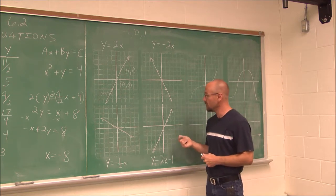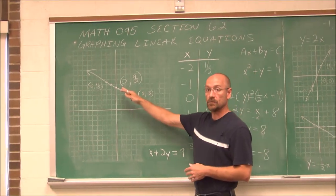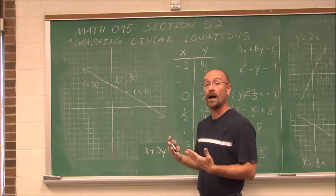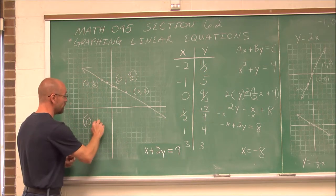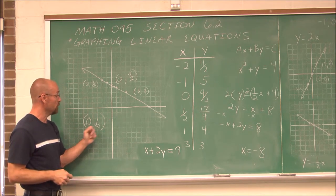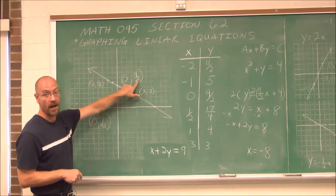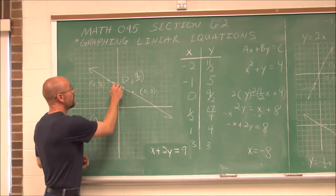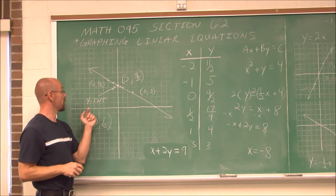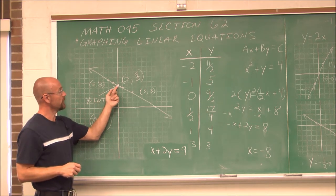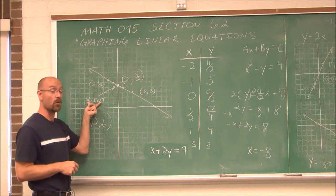A certain type of point we're going to define now is called the intercept. Let's go back to this graph and define these intercepts. A y-intercept is when x is 0 — x is 0 and y is going to be some value, denoted with b. We already found that: when x was 0, y was 9 halves. That point is the y-intercept — this is where it crosses the y-axis, and that's why it's called the y-intercept.